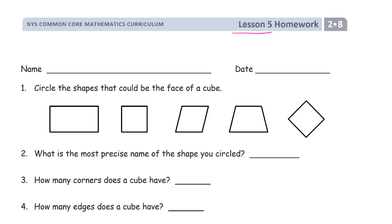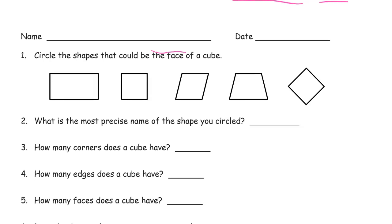Welcome to the homework for lesson 5. This is module 2 of 2nd grade. Get your name on here first. It says circle the shapes that could be the face of a cube. A face of an object is a flat surface, and so these are all flat shapes.